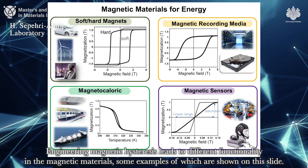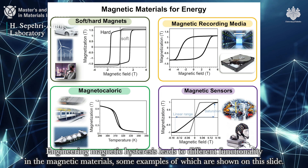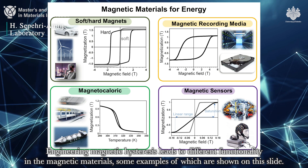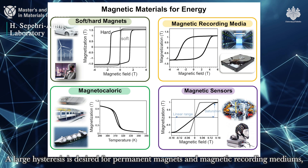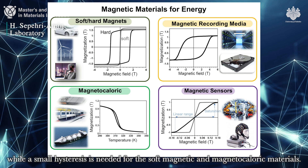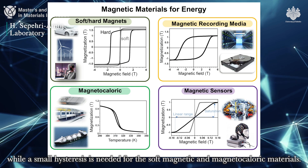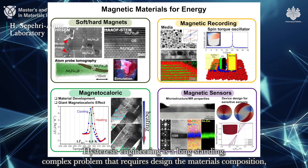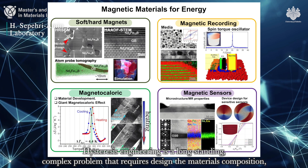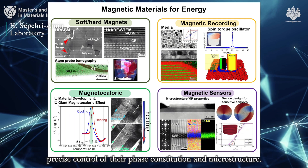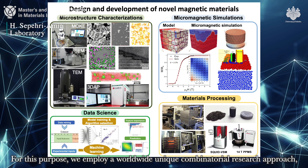Engineering magnetic hysteresis leads to different functionality in magnetic materials, some examples of which are shown on this slide. A large hysteresis is desired for permanent magnets and magnetic recording mediums, while a small hysteresis is needed for soft magnetic and magnetocaloric materials. Hysteresis engineering is a long-standing complex problem that requires designing the materials composition, precise control of their phase constitution and microstructure.